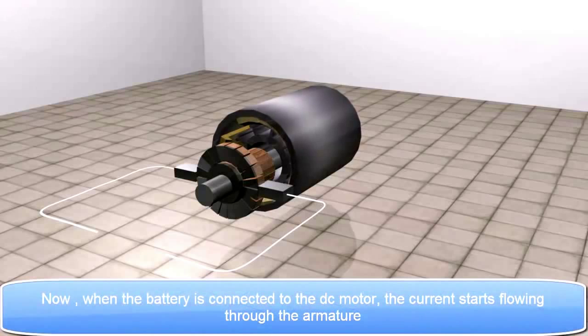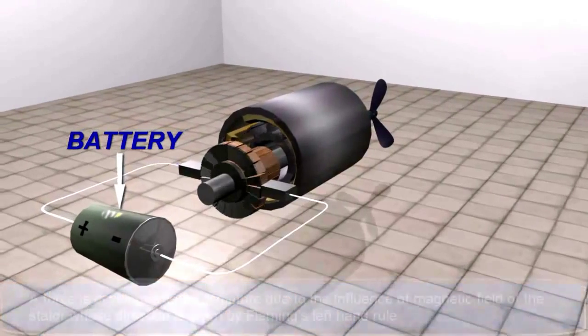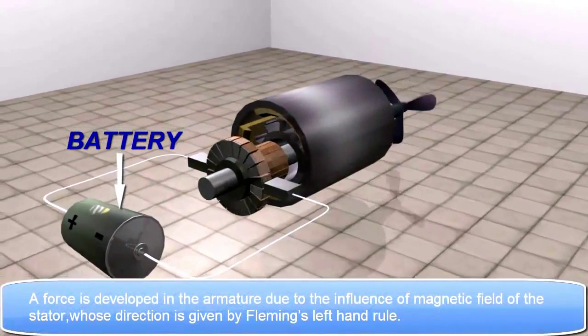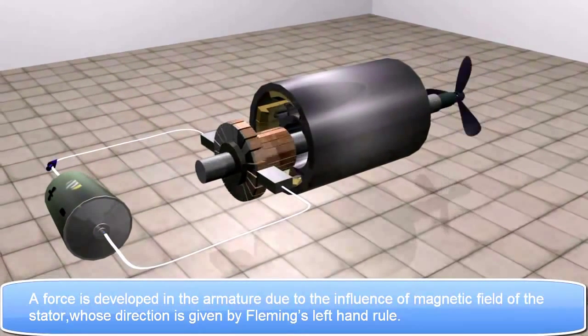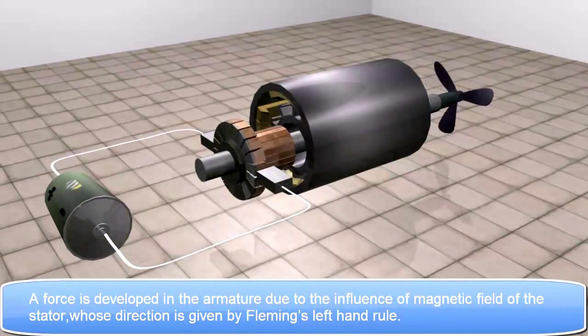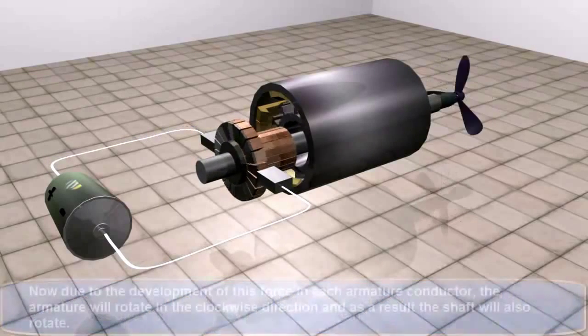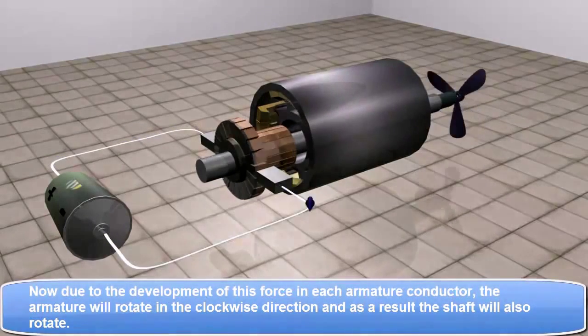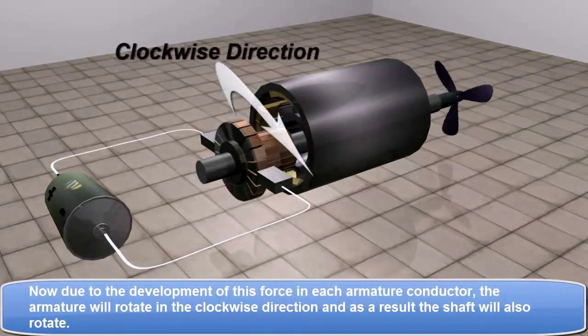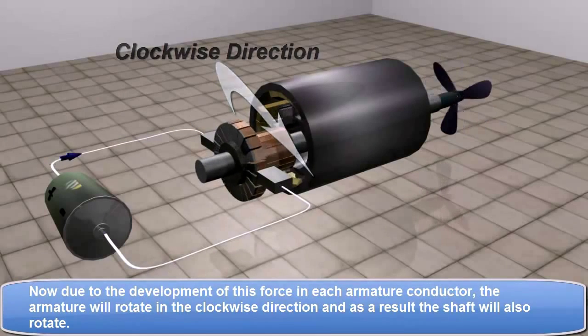Now when the battery is connected to the DC motor, the current starts flowing through the armature. A force is developed in the armature due to the influence of magnetic field of the stator, whose direction is given by Fleming's left-hand rule. Now due to the development of this force in each armature conductor, the armature will rotate in the clockwise direction. And as a result, the shaft will also rotate.